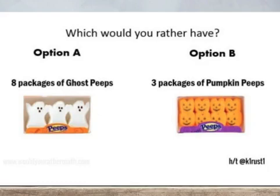Would you rather have option A or option B? Some of you are perhaps thinking you'd rather have option B — you might say, I would like to have three packages of those pumpkin peeps because I prefer that flavor, I'd get 24 of them. Some of you might say you prefer option A because both options give you 24 peeps, but the ghost peeps are larger than the pumpkin peeps, so I'd like 24 of the ghost peeps.